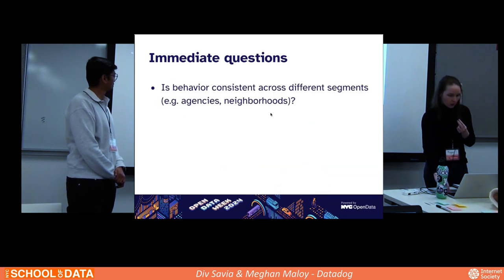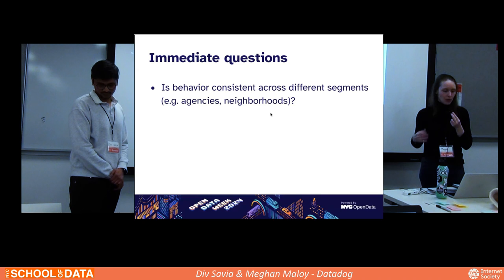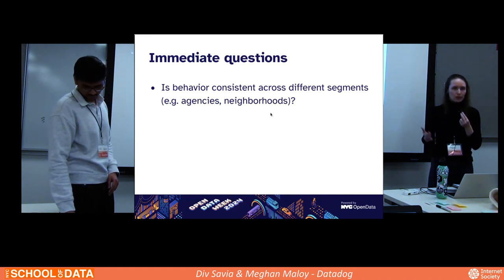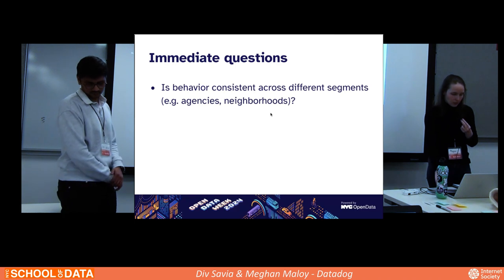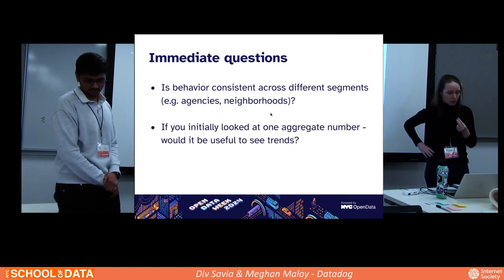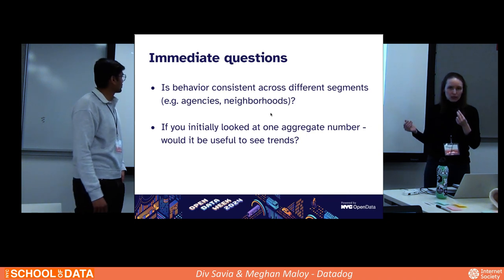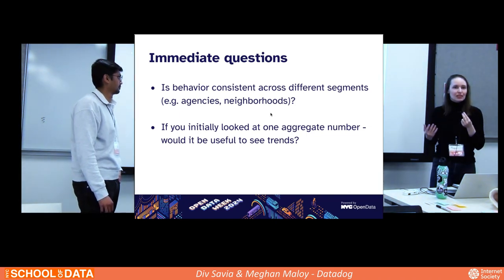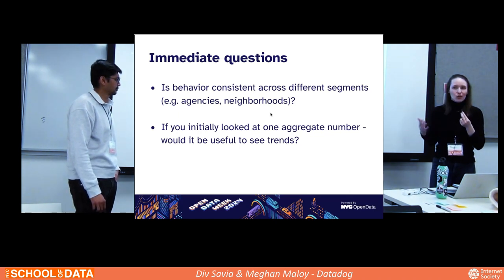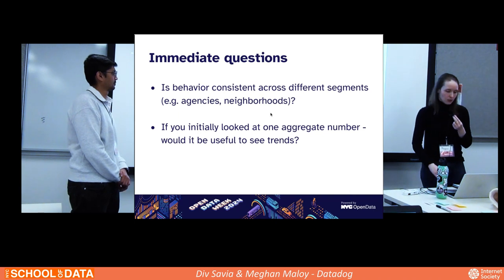Other follow-up questions you can ask: you might want to see data segmented by different agencies or neighborhoods to break it out in different ways. If you have an initial statistic like 100 rat complaints, is that high or low? Comparing across agencies or neighborhoods gives you context to understand the relevance of your numbers. You can also look at trends over time - rat complaints are constantly evolving as the city makes efforts to reduce rats. Looking at a five-year span might not represent the current situation well if major efforts were only implemented in the last year.